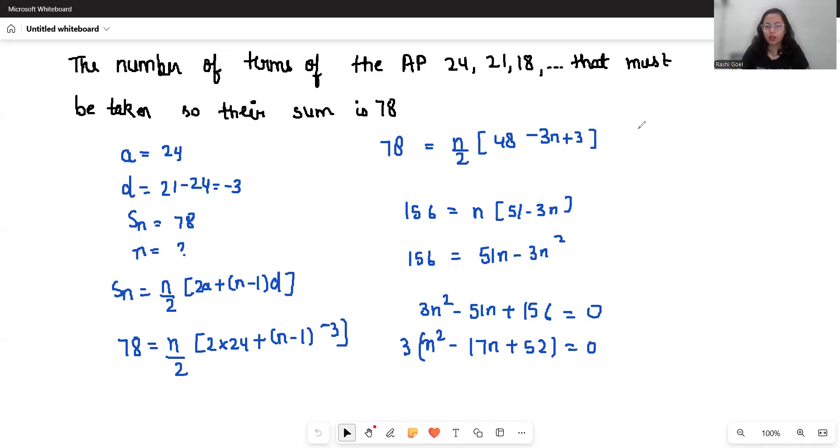Now, n square minus 17n plus 52 equals 0. From here n minus 4 and n minus 13 equals 0. So n equals 4 or n equals 13.